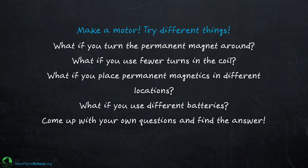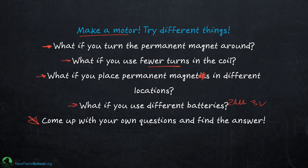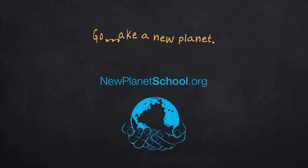So with that, go make a motor. Try out some different things. Here's some things that you should try to play with. What happens if you turn the magnets around? I've only talked about one particular orientation. What if you flip it? What happens to the motor? Does it still work? Vary some things. Vary the number of turns in the coil. Put the magnets in different locations and see what happens. What happens if you use different batteries? In here I was using two AAA batteries, which is about three volts. What if you use a D battery? What if you use only one? What if you use four? How does that affect the motor? But more importantly, come up with a lot of your own questions and see if you can find the answer to those questions. That's actually really what the fun part is here. Thank you for coming to New Planet School. I hope to see you here very soon.